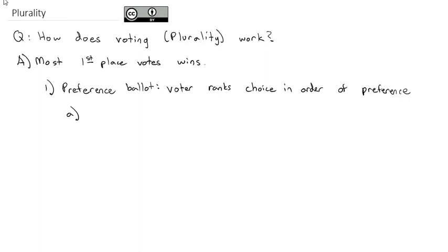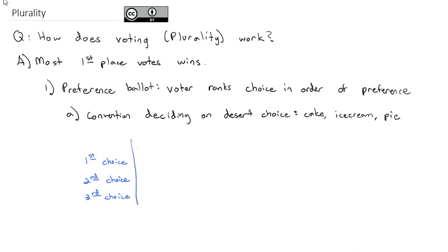For example, we have some big national convention and the committee has to decide on the dessert choice. They've got three options: cake, ice cream, or pie. So they're going to each rank their options as first choice, second choice, and third choice.